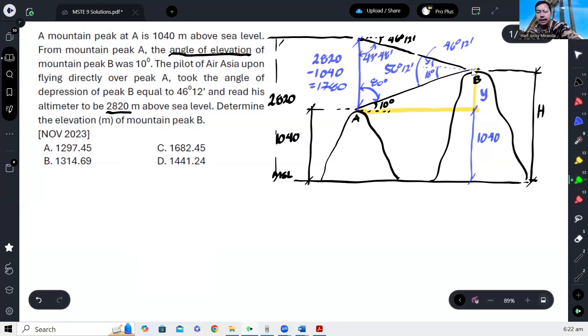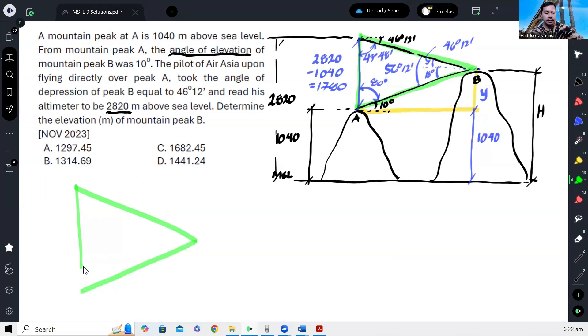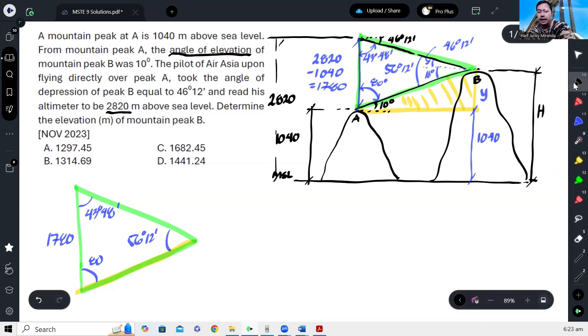So actually we can consider this triangle. This is 80, this is 43 degrees 48 minutes, and this is 56 degrees 12 minutes. The measure of this side is 1,780. Actually, in order for us to calculate y, we need this side, the hypotenuse of this triangle. Let's call it z.